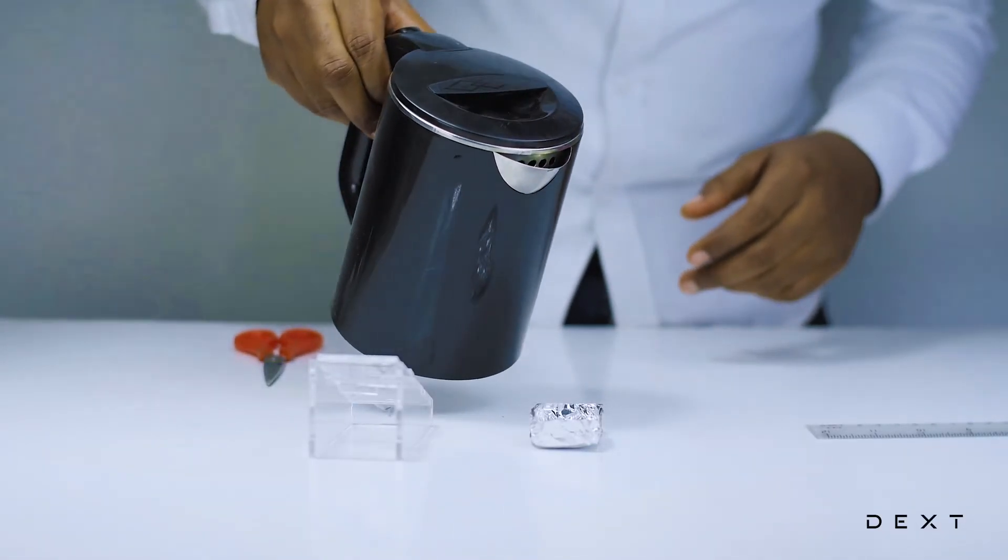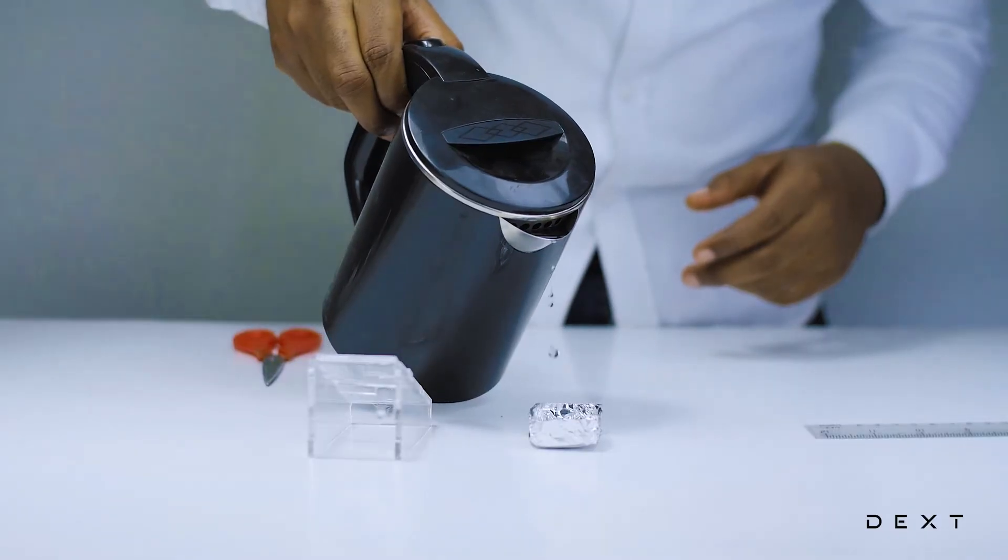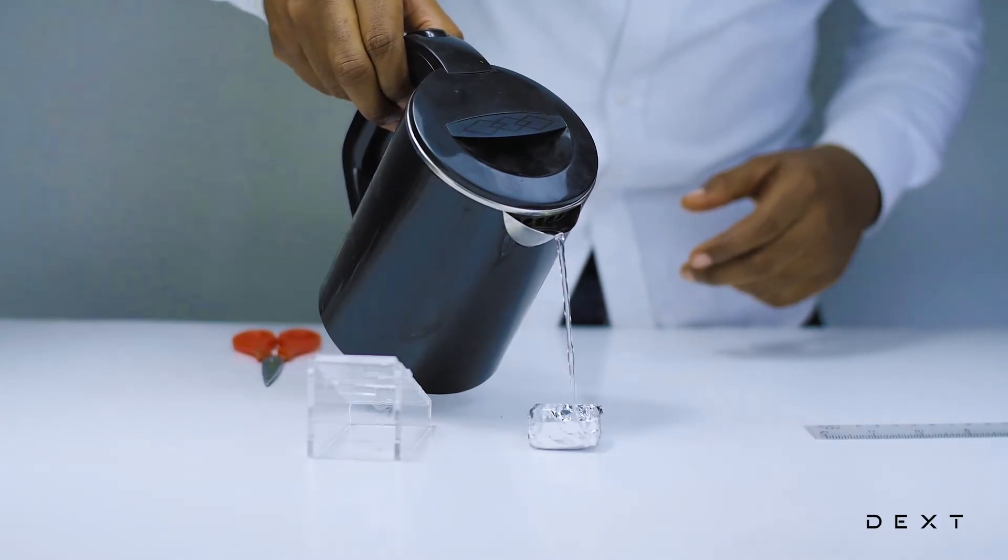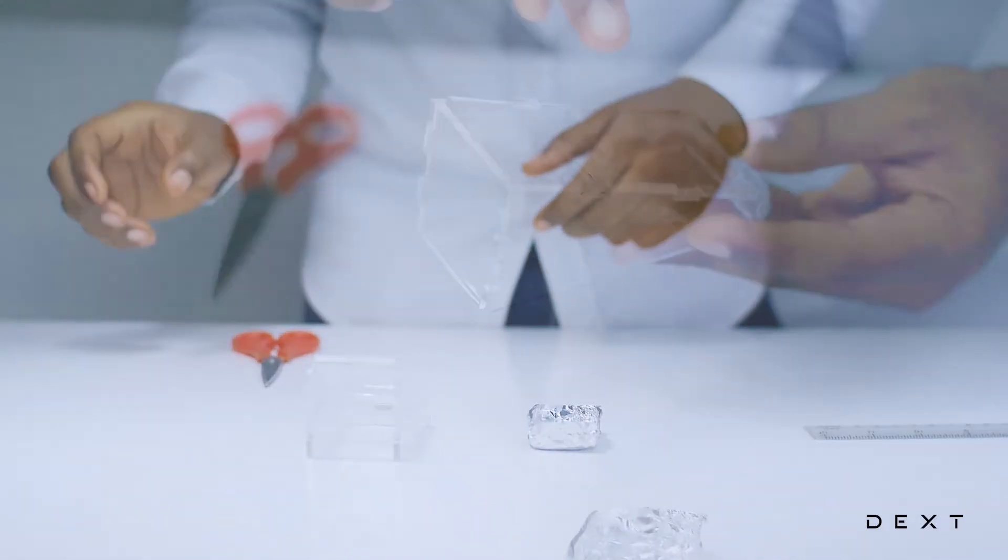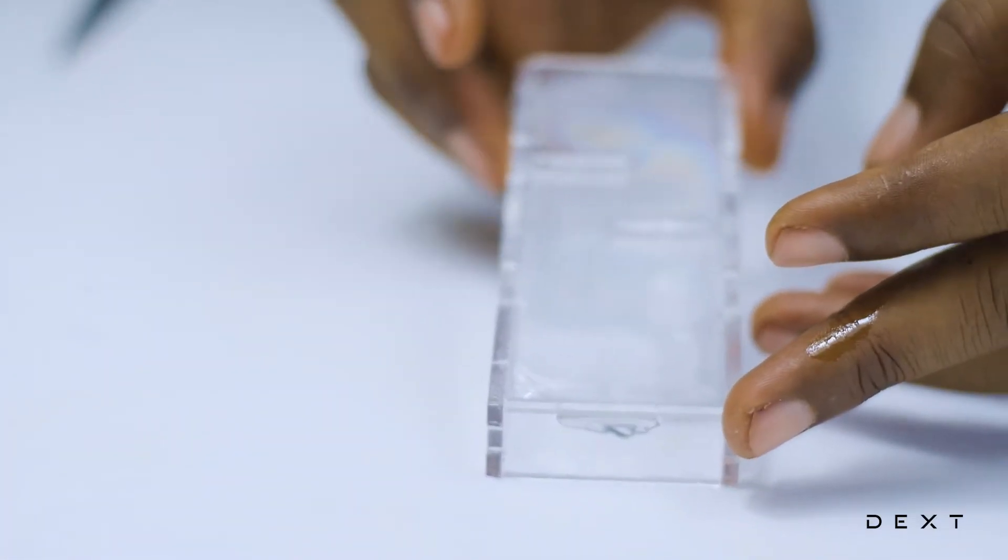We are going to pour some hot water gently into our container, our aluminum foil container, and then we are going to place our chamber on top of it. And immediately you do it, you are going to start observing some water droplets forming on the surface because of the temperature difference between the surface of the plastic and the water vapor that is rising.